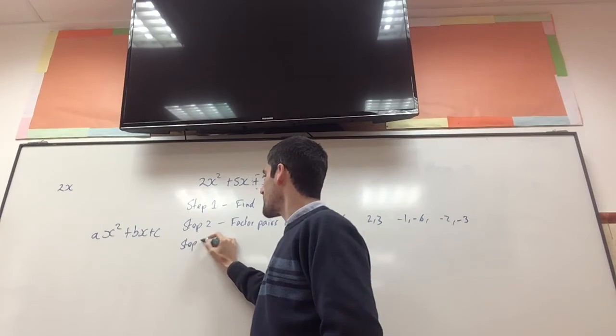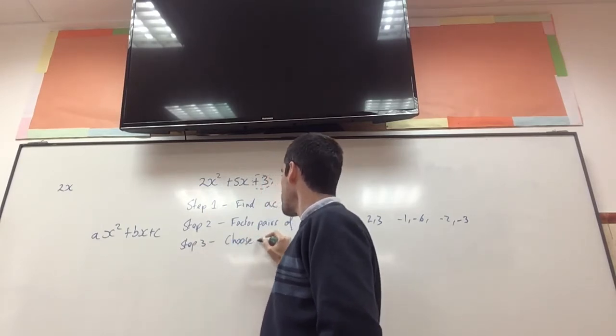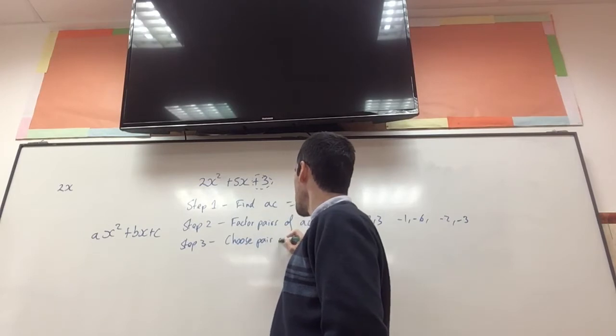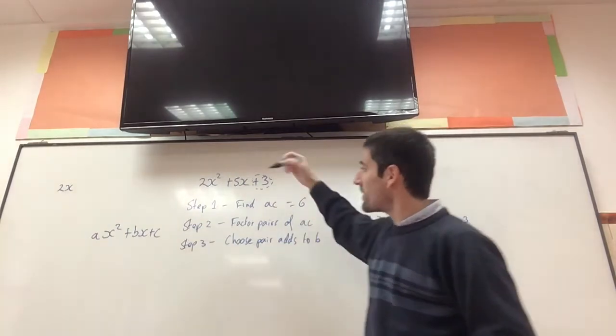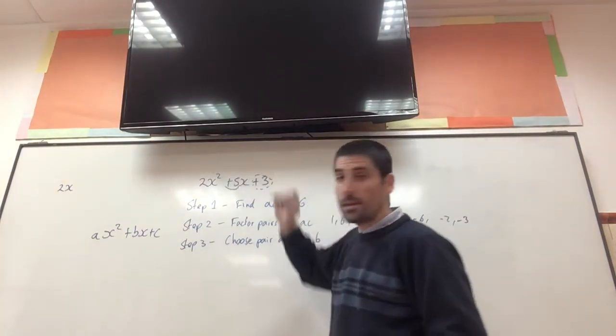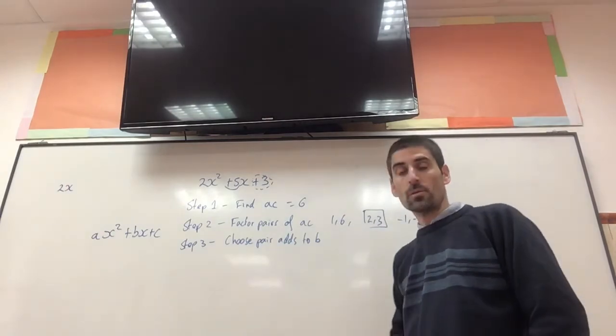And then, step 3, choose the pair that adds to b. So in my case, again, remember about the sign, b is positive 5, so this is my pair. 2, 3.